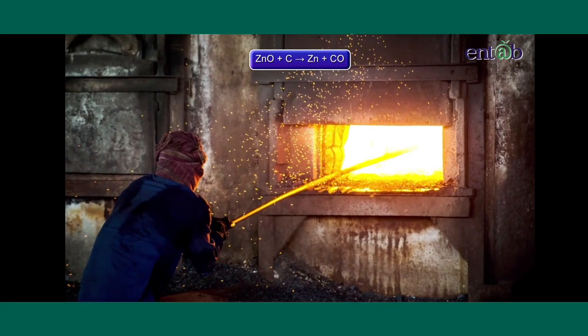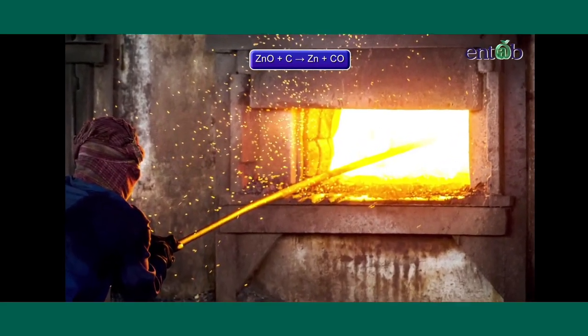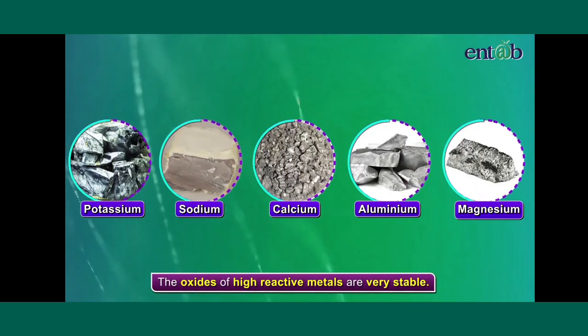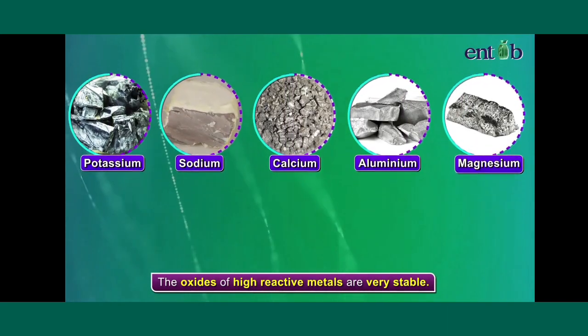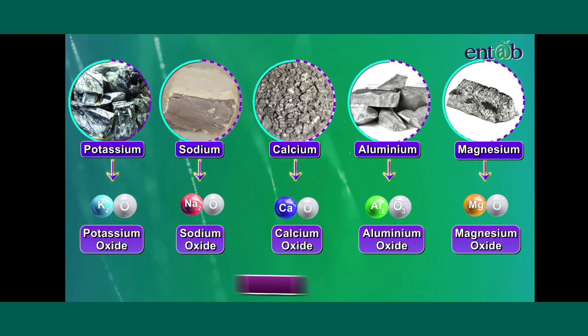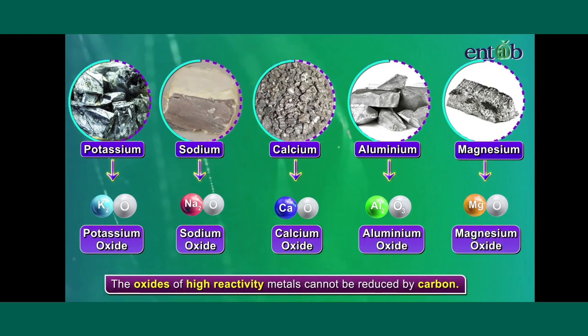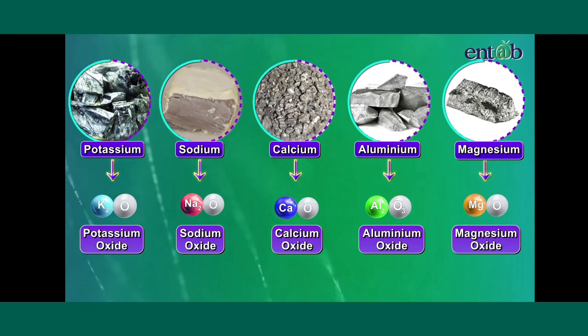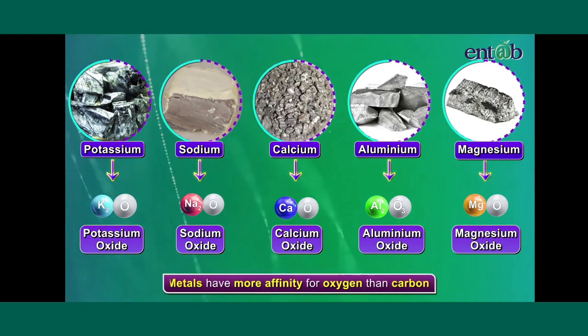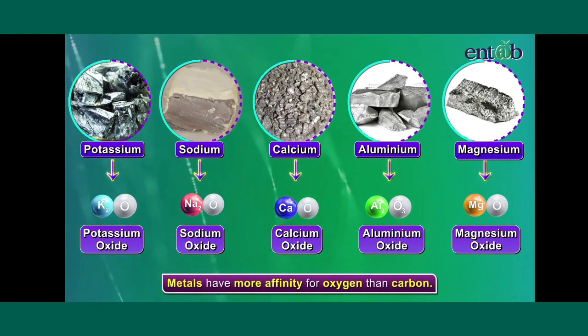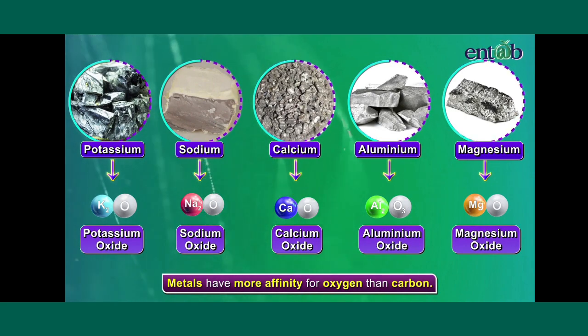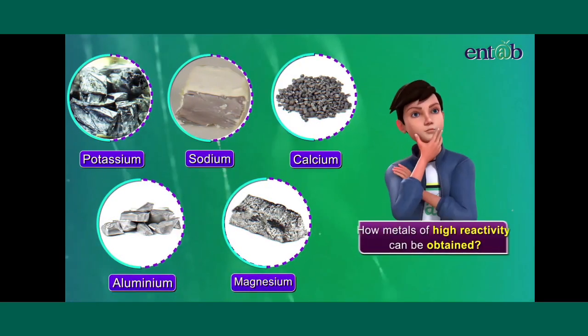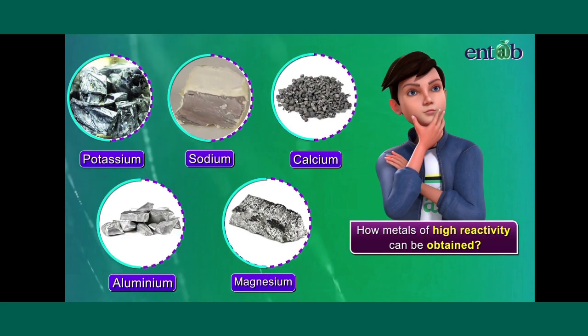Do you remember that we have utilized carbon as a reducing agent? But the oxides of these highly reactive metals are very stable and cannot be reduced by carbon. Looking at this, can we say that these metals have more affinity for oxygen than the affinity that carbon possesses? Then how do we get these metals?